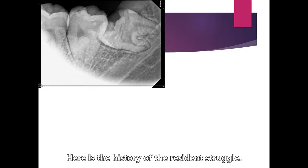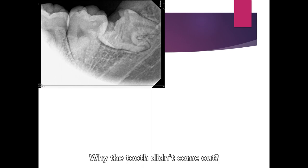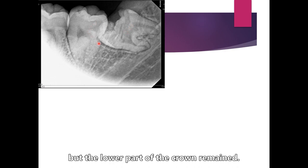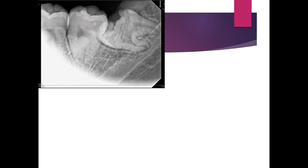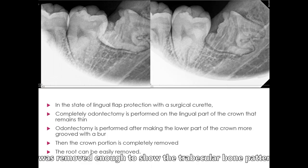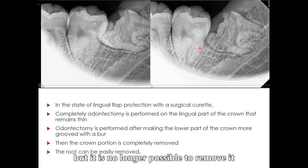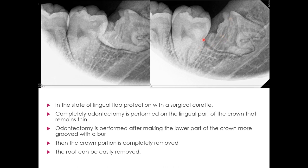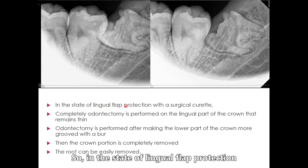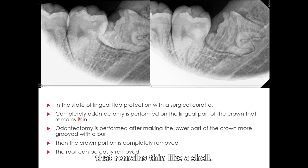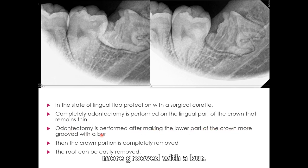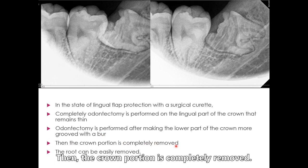Here is the history of the resident's struggle: she wondered why the tooth didn't come out and took a periapical view. The upper part of the crown was removed by odontectomy, but the lower part remained. In the second trial, the crown was removed enough to show the trabecular bone pattern through it, but it was no longer possible to remove it because of the lower angular portion that remained like a hook. So, with lingual flap protection using a surgical curette, complete odontectomy is performed on the lingual part of the crown that remains thin like a shell. Odontectomy is performed after making the lower part of the crown more grooved with a bur. Then the crown portion is completely removed, and the root can be easily removed.